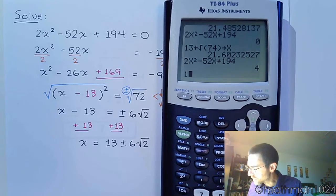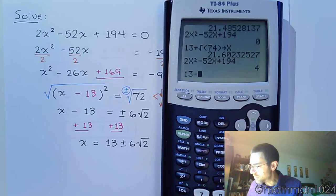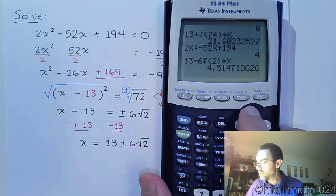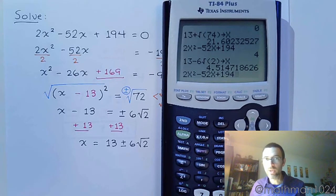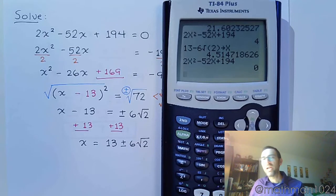And, of course, it's simple enough to go ahead and try 13 minus 6 square roots of 2, store that into x, and see what happens when I evaluate 2x squared minus 52x plus 194, and I get 0. So, both the plus and the minus version of my answer works.